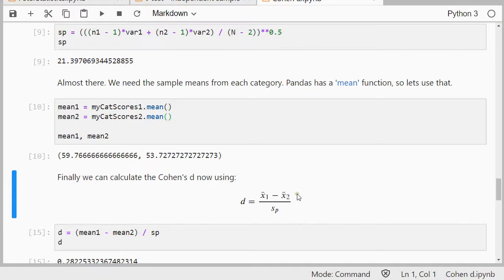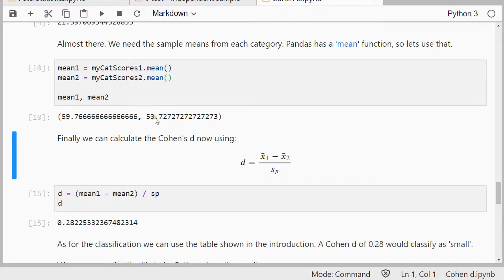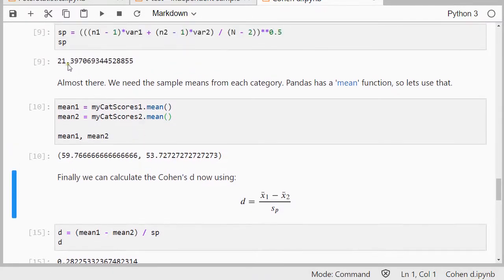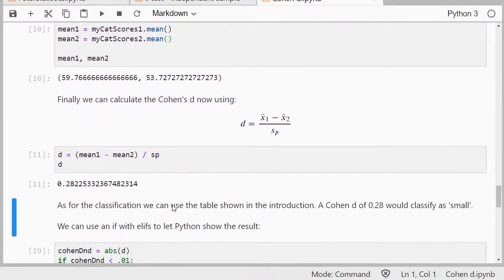And finally we can then calculate that Cohen's D, and simply subtract these two from each other, and divide it over that 21 point, well let's say 40 that we have there. And that gives us Cohen's D.